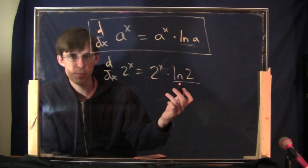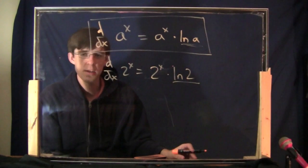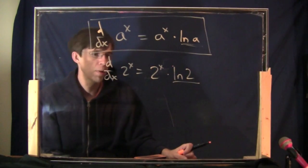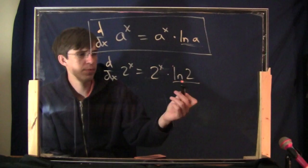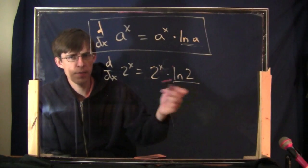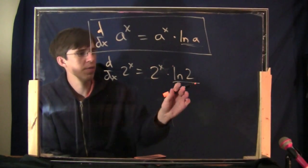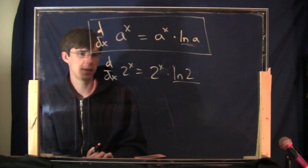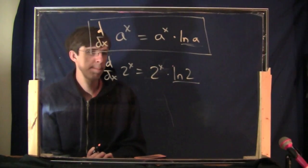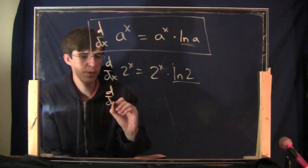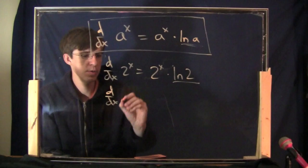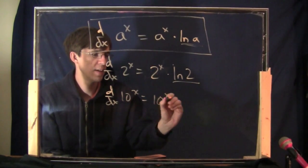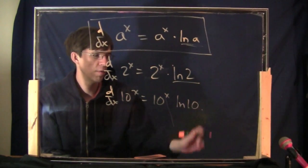I don't actually care what that number is typically, unless doing a real-world problem. On homework, you can just leave it like that — putting it in your calculator is not necessary. It doesn't matter what the base is, you use the same formula. For 10 to the x, you get 10 to the x times the natural log of 10.